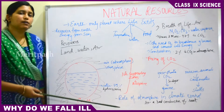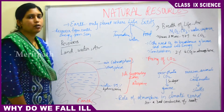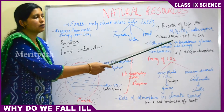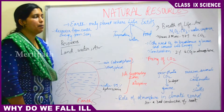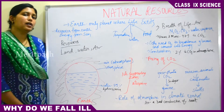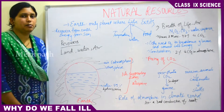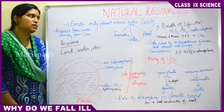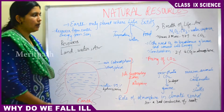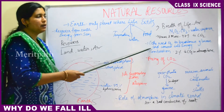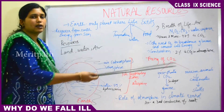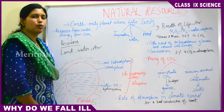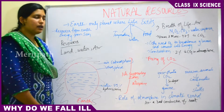Earth is the only planet with a lot of air, water, and oxygen. On Venus and Mars, 97% of the surface atmosphere is covered by carbon dioxide, which is why life there is not possible — human beings need oxygen to survive. Both prokaryotic and eukaryotic cells need oxygen to break down glucose and convert it into energy.